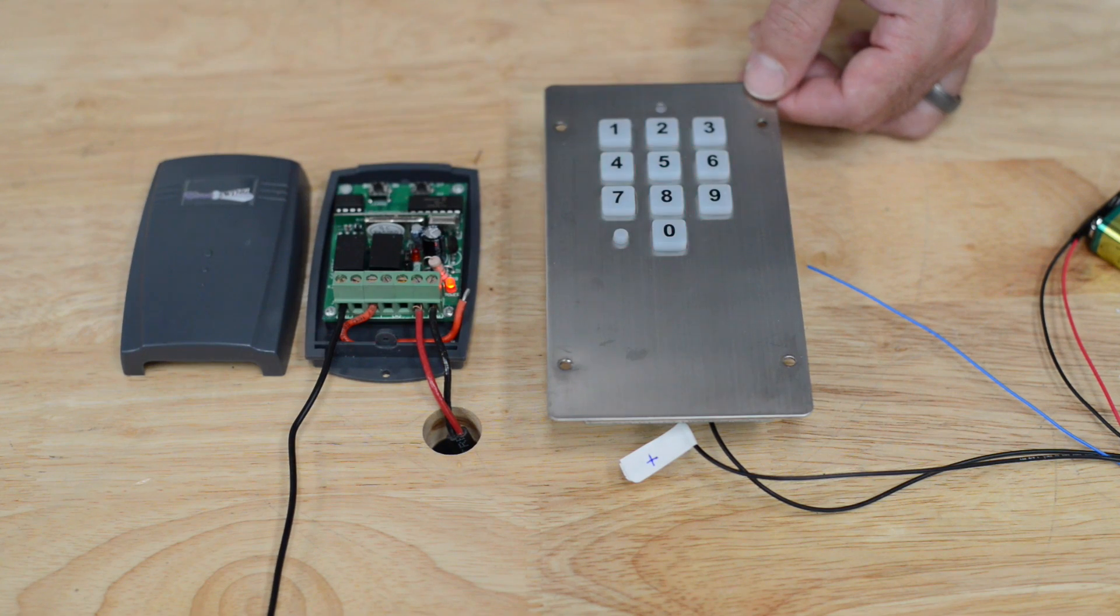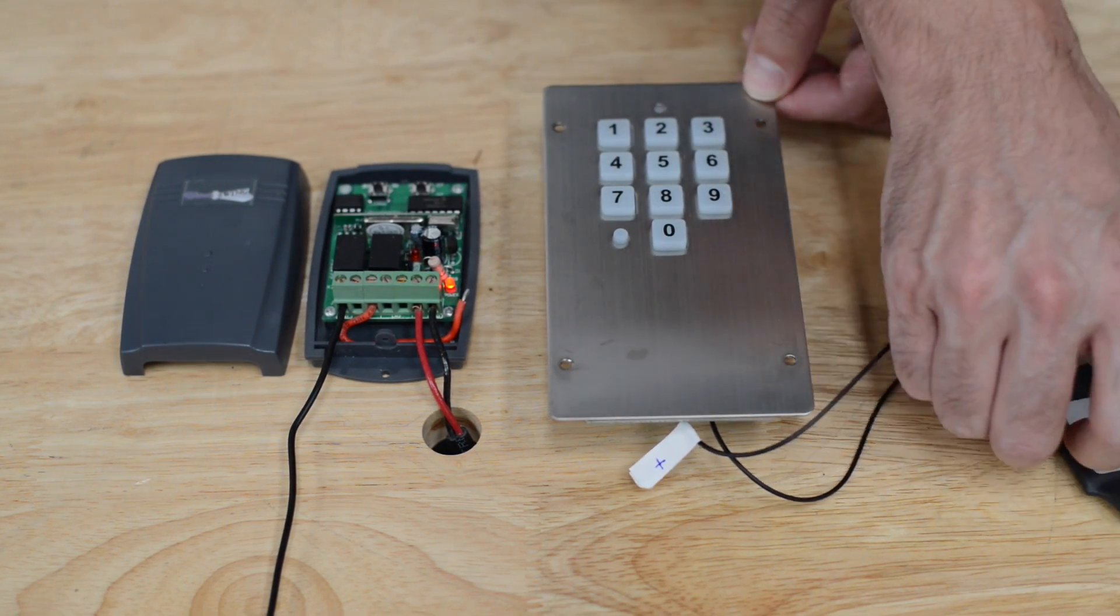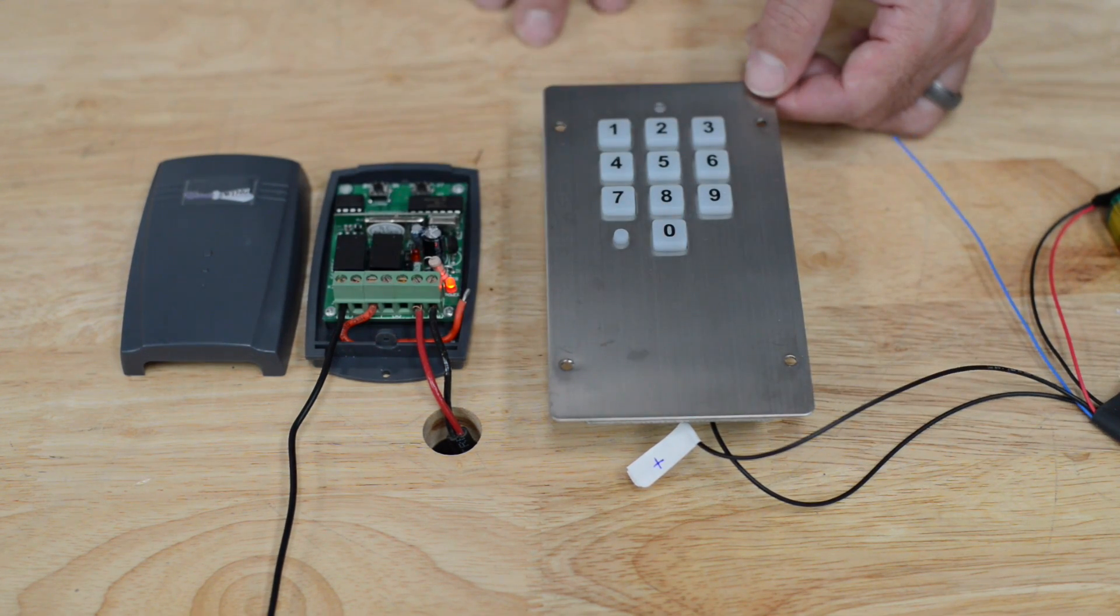2626, hear the receiver click. That's because the receiver was activated by the transmitter module that is wired into the bottom of the keypad.